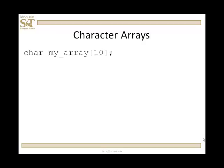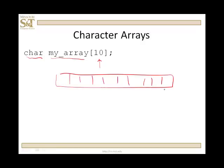Let's declare an array of characters. You declare an array of characters like you declare an array of anything, except that the base type is character. I called it my_array and I've made it size 10. I have an array of 10 boxes indexed from 0 to 9, and each one of these is some character. What makes it a null terminated character array? Well, not this declaration alone, but a declaration and an initialization, or some other method.